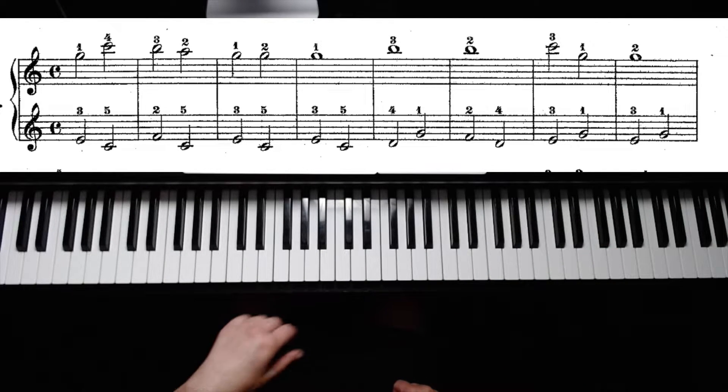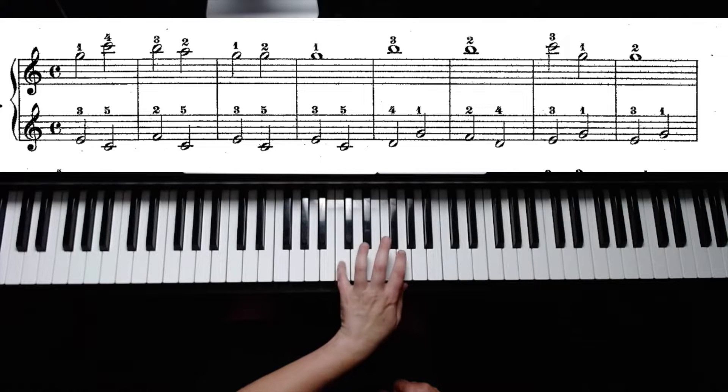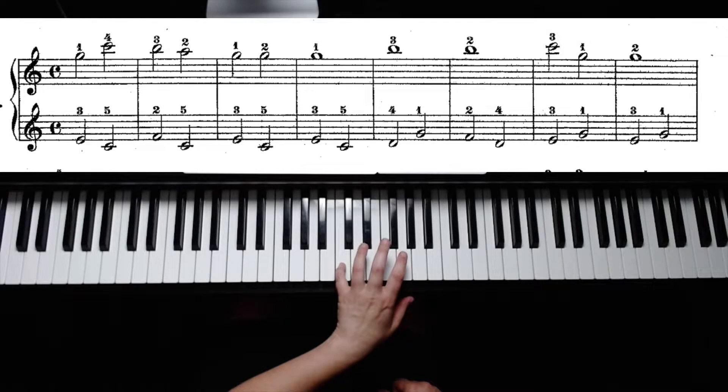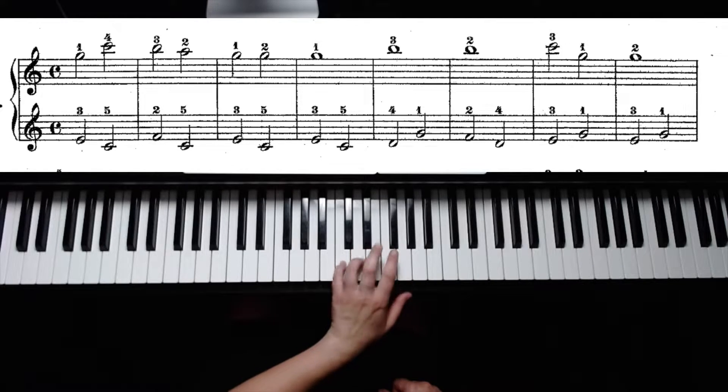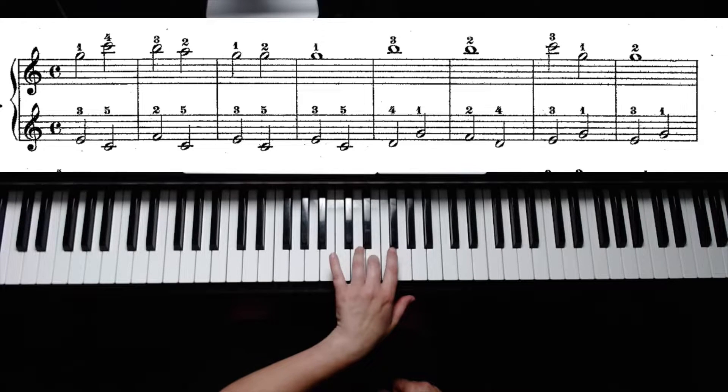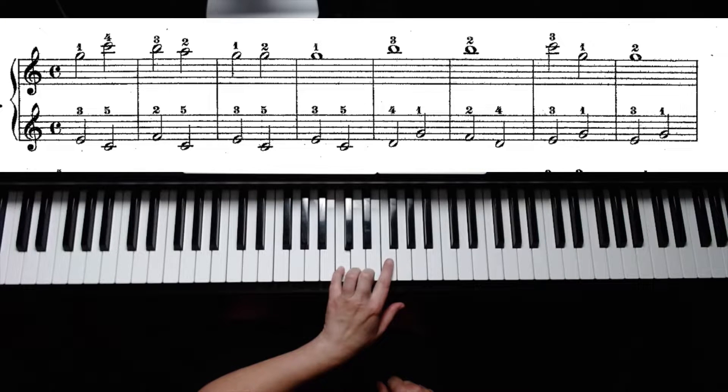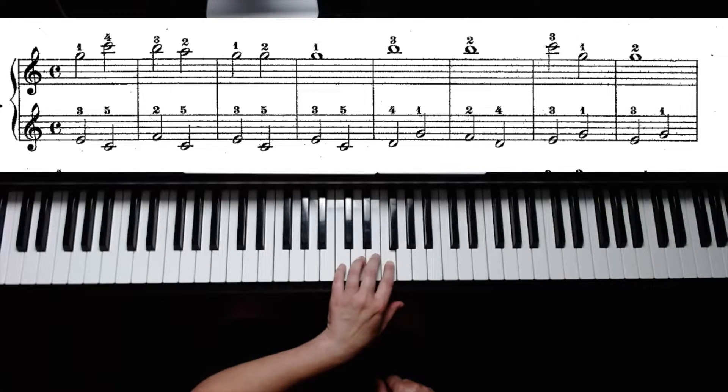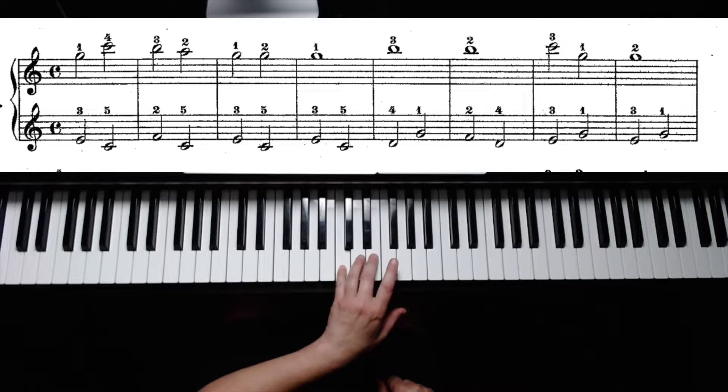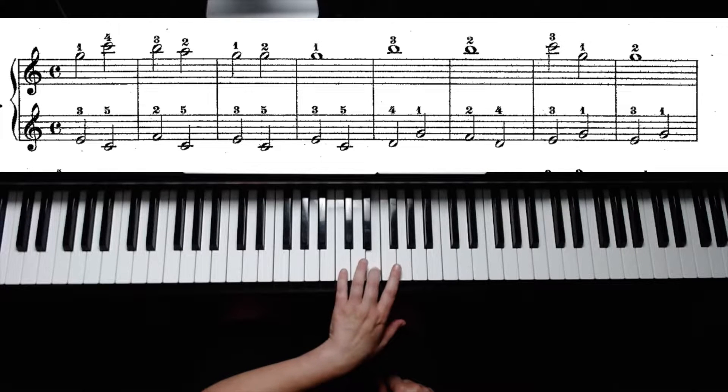Now for that first half, let's start to learn the left hand. The left hand fifth finger can be positioned right over middle C. The first note, however, is the letter E with your third finger. Going down to C with your fifth finger, then F with your second finger, back to C, E, C, E, C.